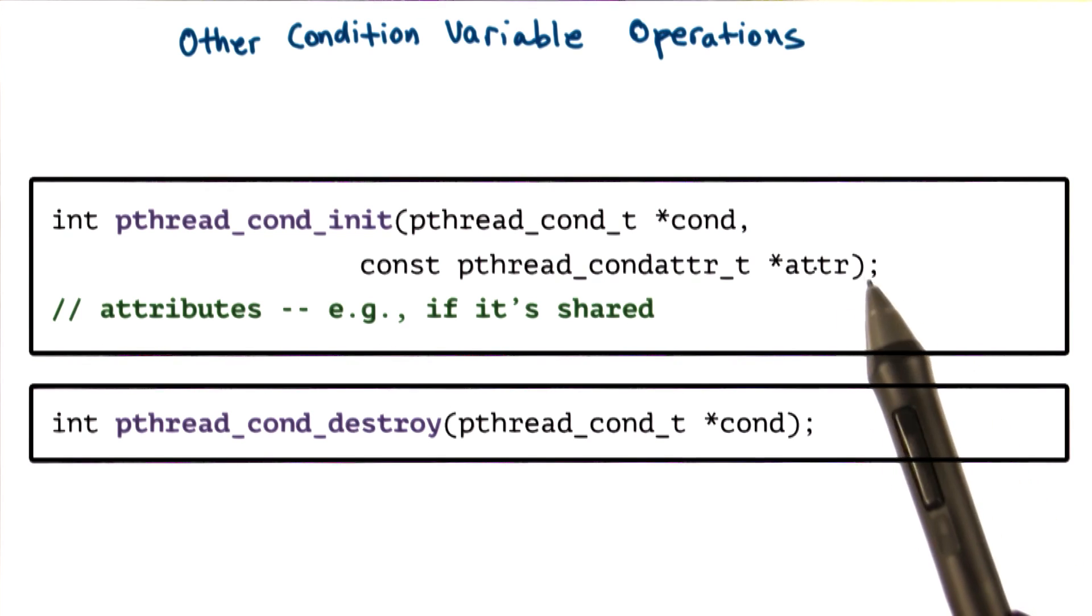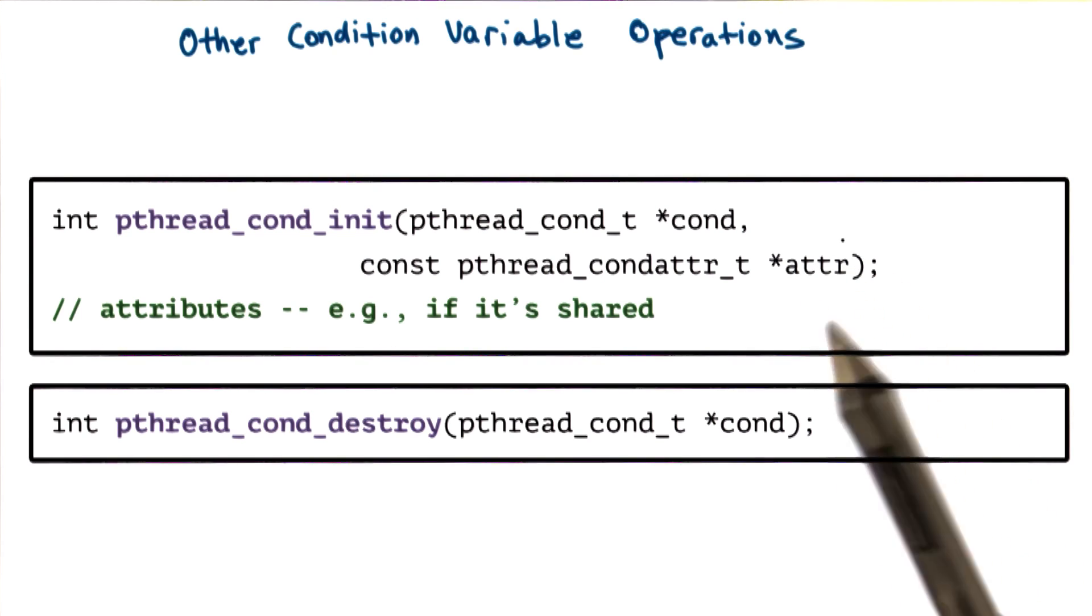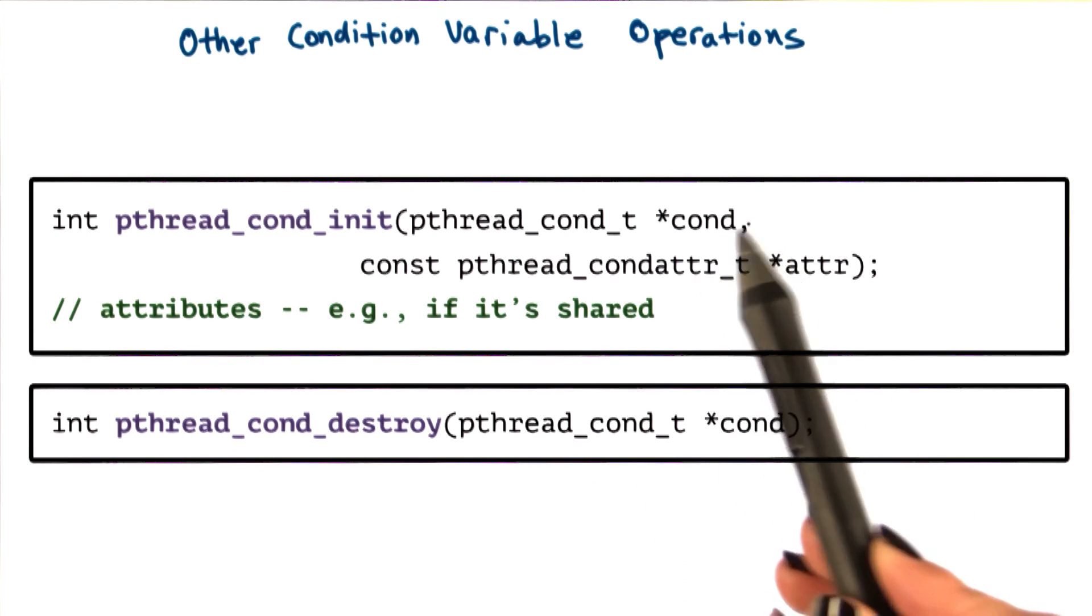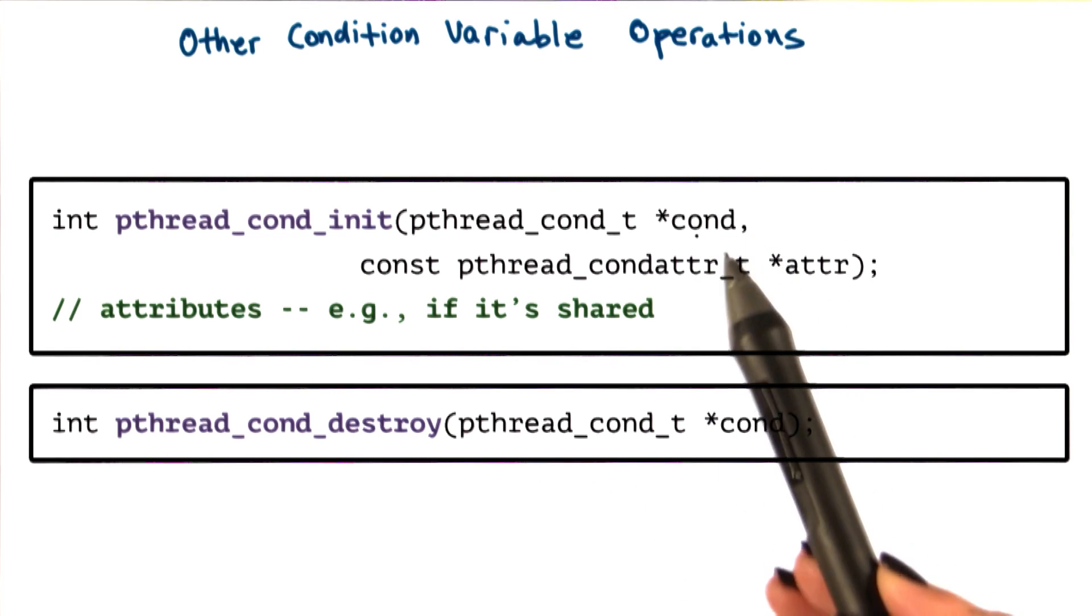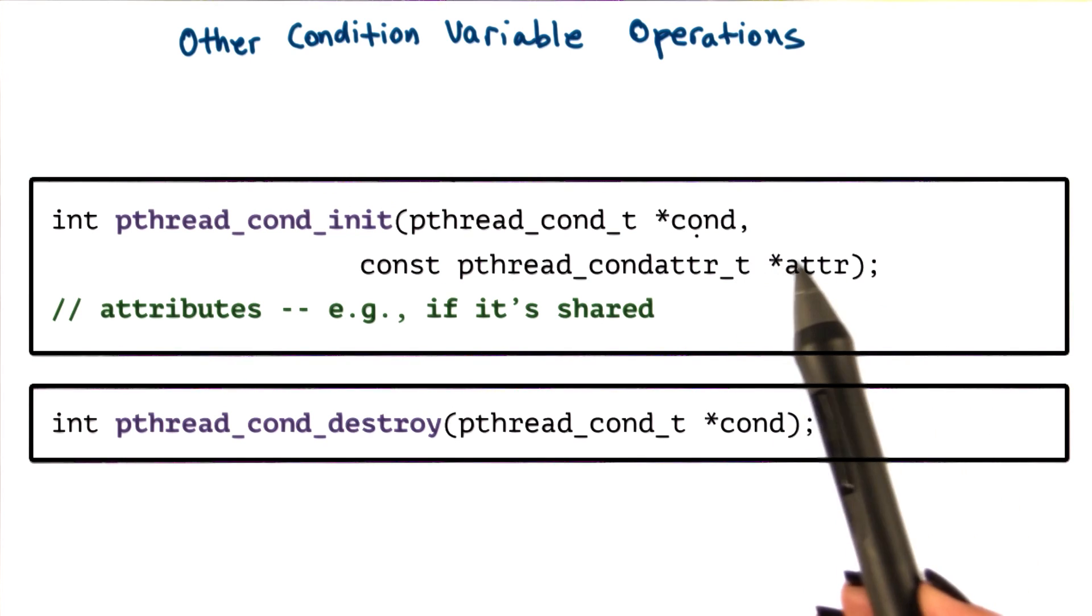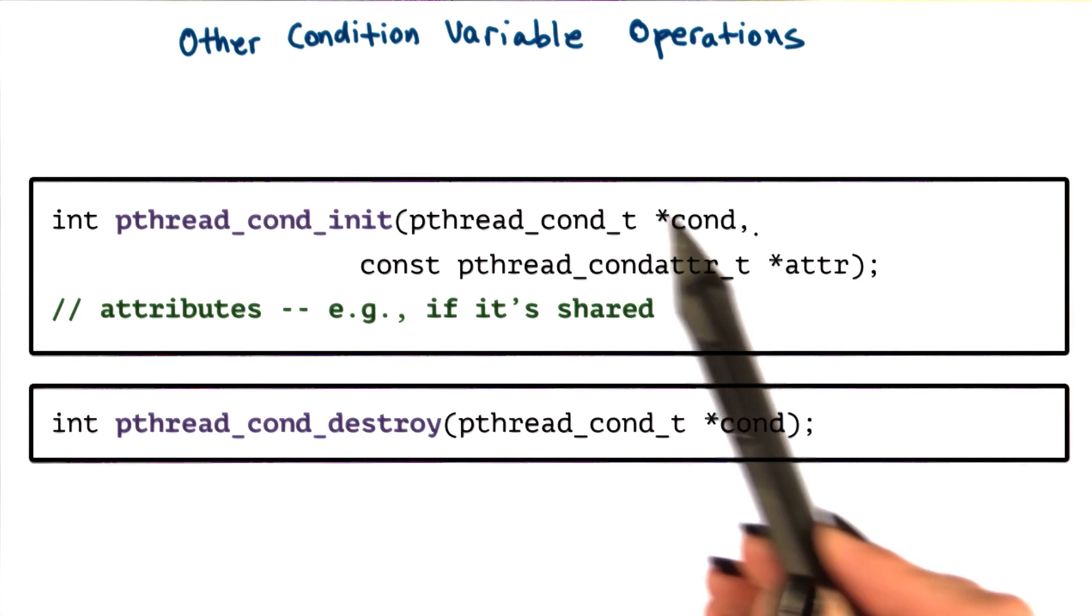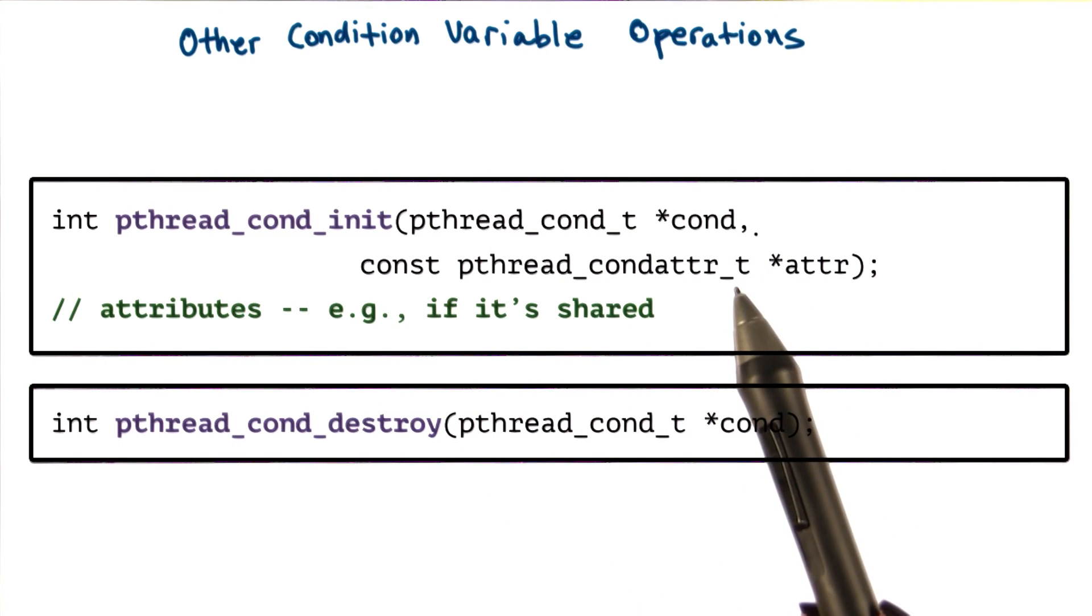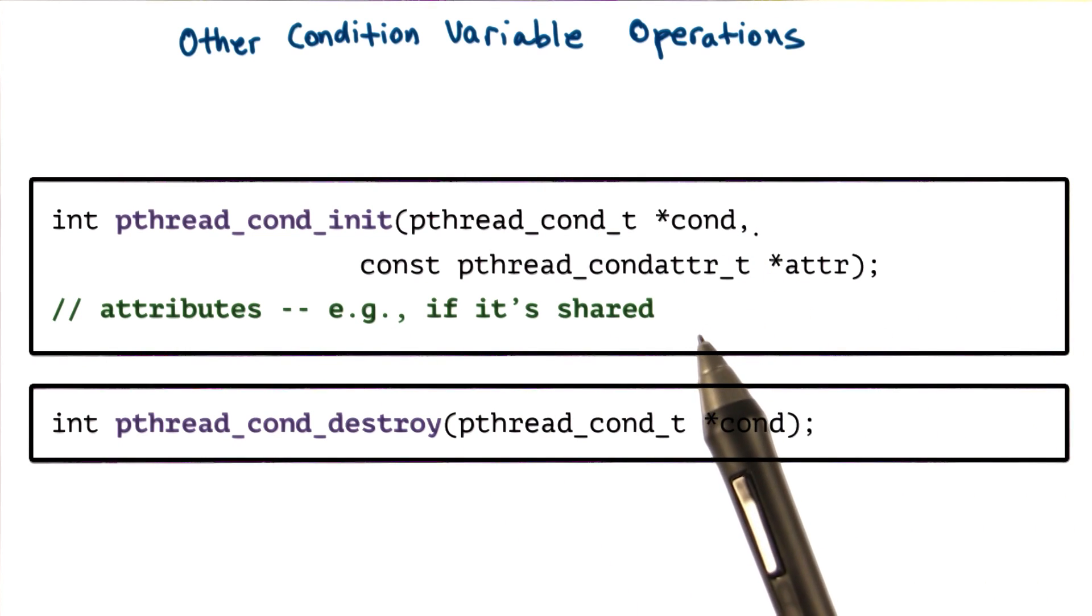Like what we saw with mutexes, the attributes can further specify the behavior that pthreads provides with conditions. For instance, an example is whether or not the condition variable will be used only within threads that belong to a single process or also shared across processes.